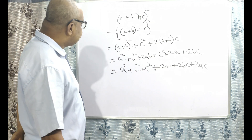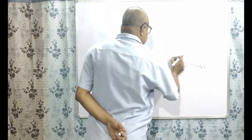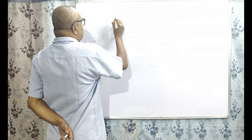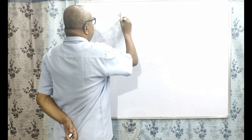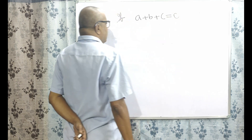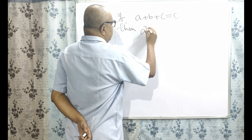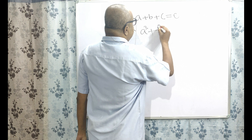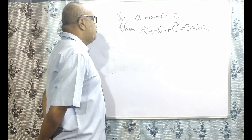Now one more formula: A cubed plus B cubed plus C cubed is equal to 3ABC. To derive this formula, we first take A plus B plus C equal to zero.